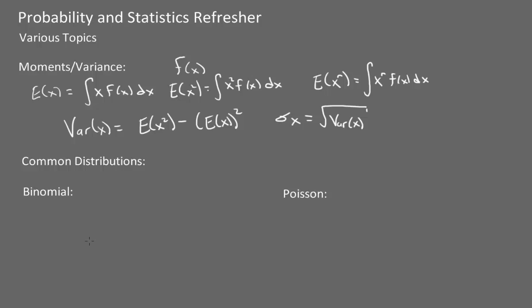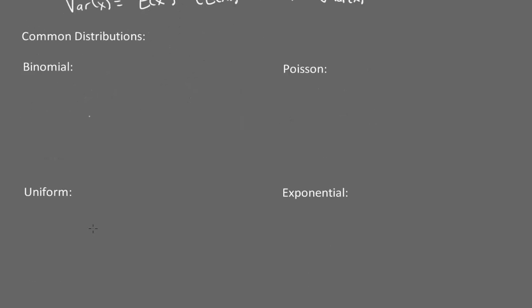Some common distributions that come up on the exam are the binomial, Poisson, uniform, exponential, normal, and log-normal. For the binomial, the probability function equals n choose x, times p to the x, times (1−p) to the n−x. The expected value of x is np and the variance is np(1−p).